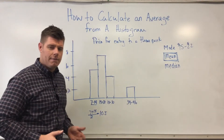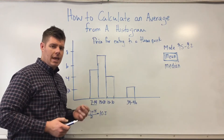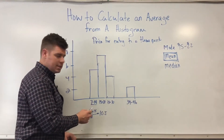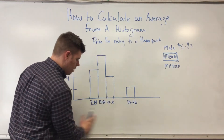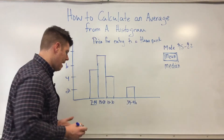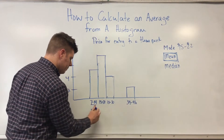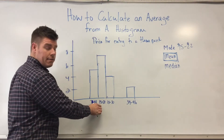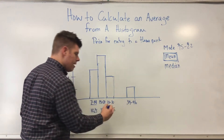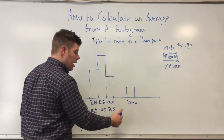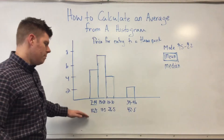Each bar in this histogram has the same spread of values — from 7 to 14 is a spread of 7, 15 to 22 is also 7, and so on. So half of 7 is 3.5, meaning the middle of 7 to 14 is 7 plus 3.5, which gives 10.5. The middle of 15 to 22 is 15 plus 3.5, giving 18.5. Then 23 plus 3.5 gives 26.5. And the middle of 39 to 46 is 39 plus 3.5, giving 42.5. Now I have the midpoint of all the bars.